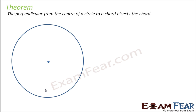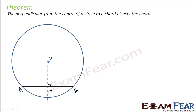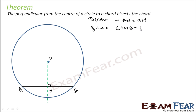Let's draw a circle, a chord, and a perpendicular to the chord passing through center O. Let the chord be AB and let the foot of the perpendicular be point M. To prove: AM is equal to BM. Given: angle OMA and angle OMB are both equal to 90 degrees, and O is the center.